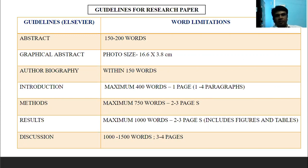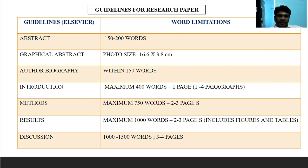Guidelines: the abstract word limit should be 150–200 words, and the graphical abstract photo size should be 16.6 × 3.8 cm. The author biography should be within 150 words. The Introduction should be a maximum of 400 words, one page with 1–4 paragraphs. Methods: maximum 750 words, 2–3 pages. Results: maximum 1000 words, 2–3 pages including figures, extending to 3–4 pages.